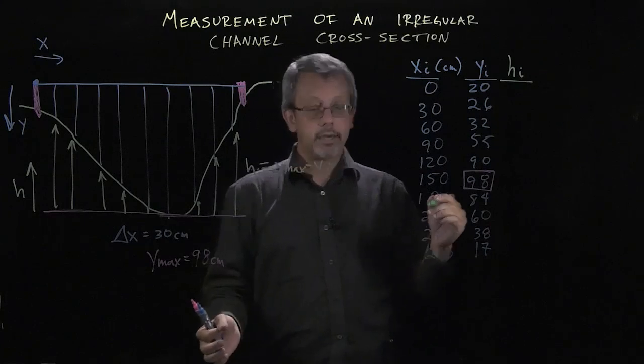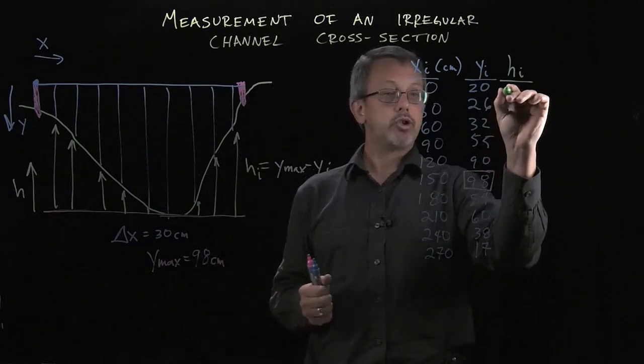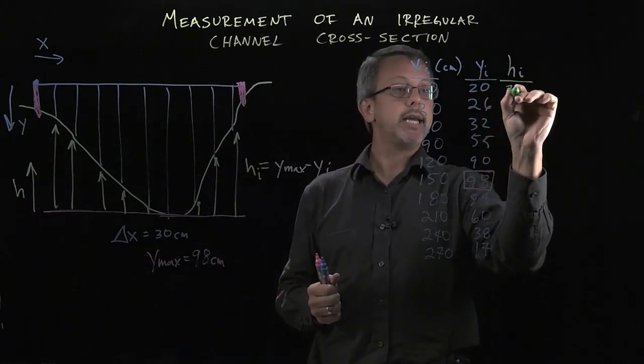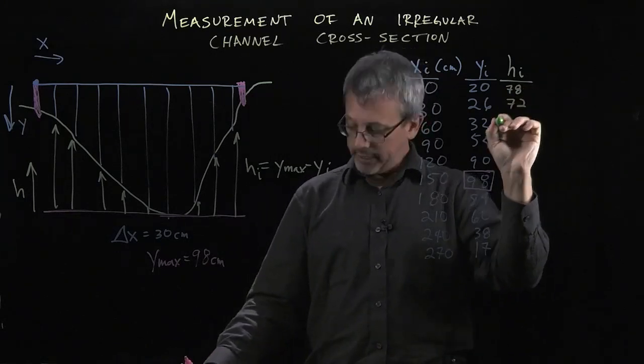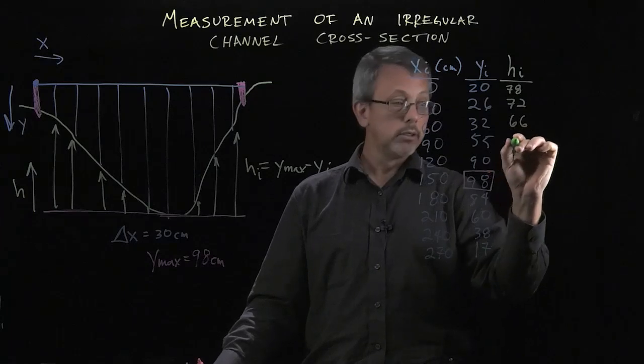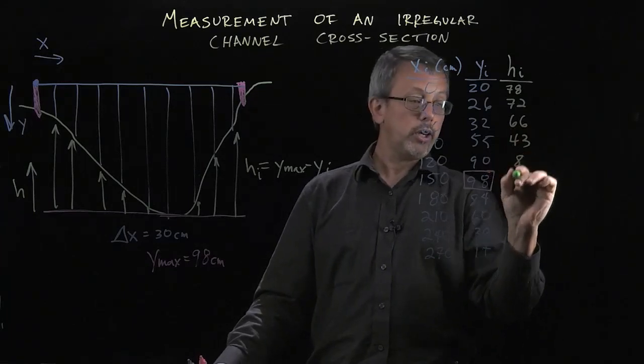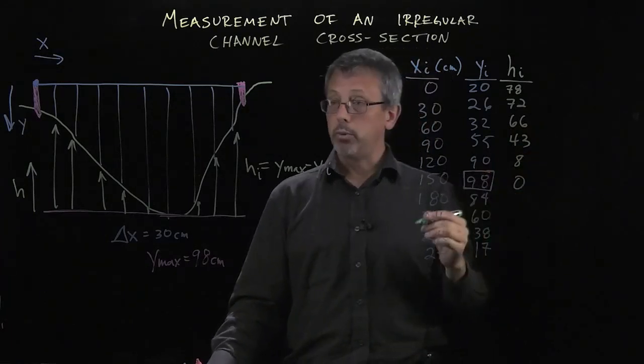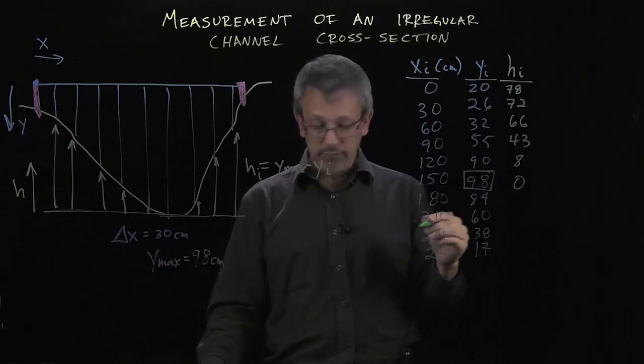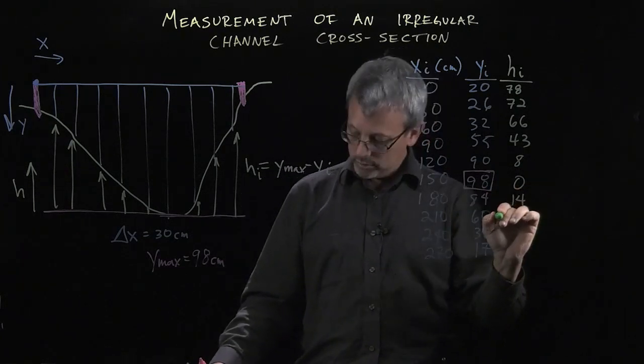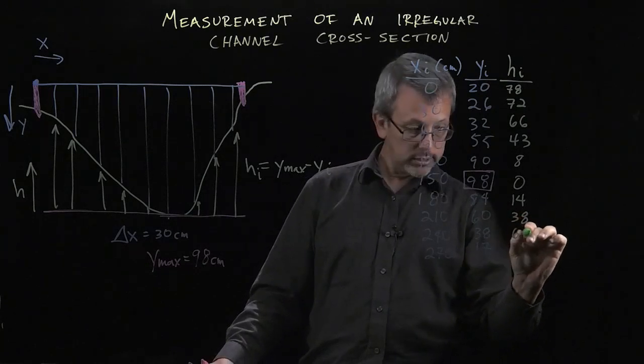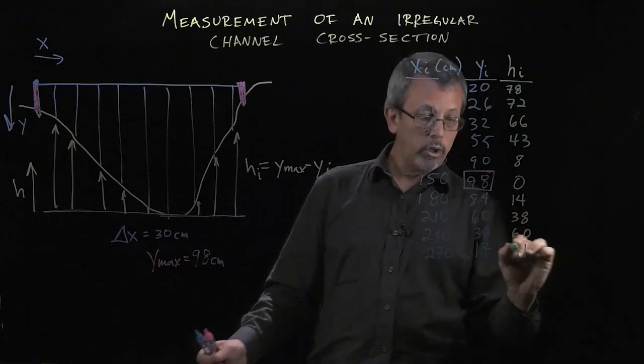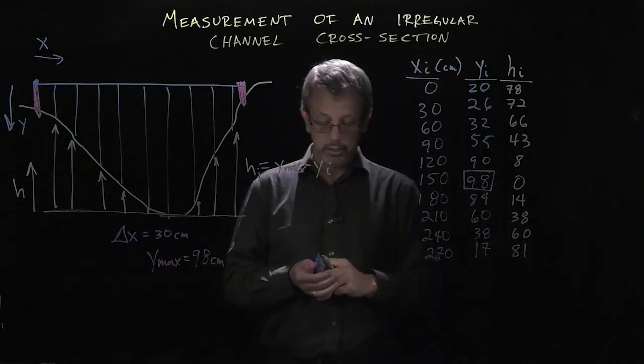So if I calculate each of these, I simply subtract 98 minus each of these. 98 minus 26 is 72, and if I continue: 72, 66, 43, 8. Notice one of the points, the lowest point, is going to have a height value of 0. Then 14, 38, 60, and finally 81 for this set of data.